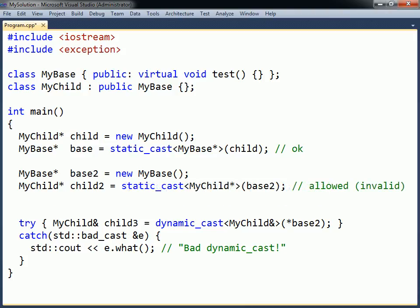If the base to derived conversion had been performed using a static cast instead of a dynamic cast, the conversion would not have failed. It would have returned a pointer that referred to an incomplete object. Dereferencing such a pointer can lead to runtime errors.